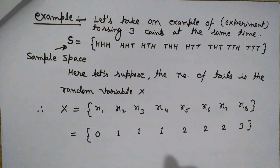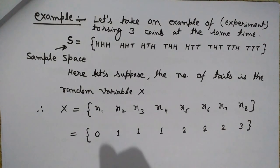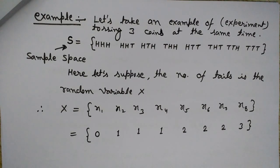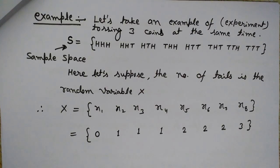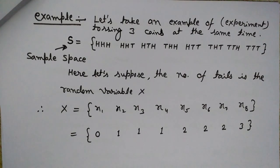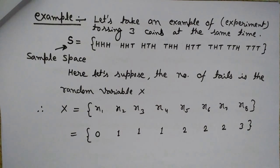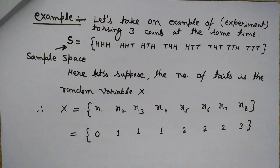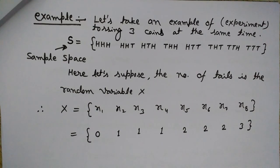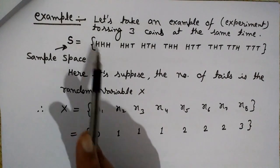Two into two into two, because the first coin may have two possibilities — head or tail — the second may have head or tail, and the third may also have two possibilities. So two cubed equals eight combinations, eight possibilities. This range of all possible values of this outcome is the sample space.